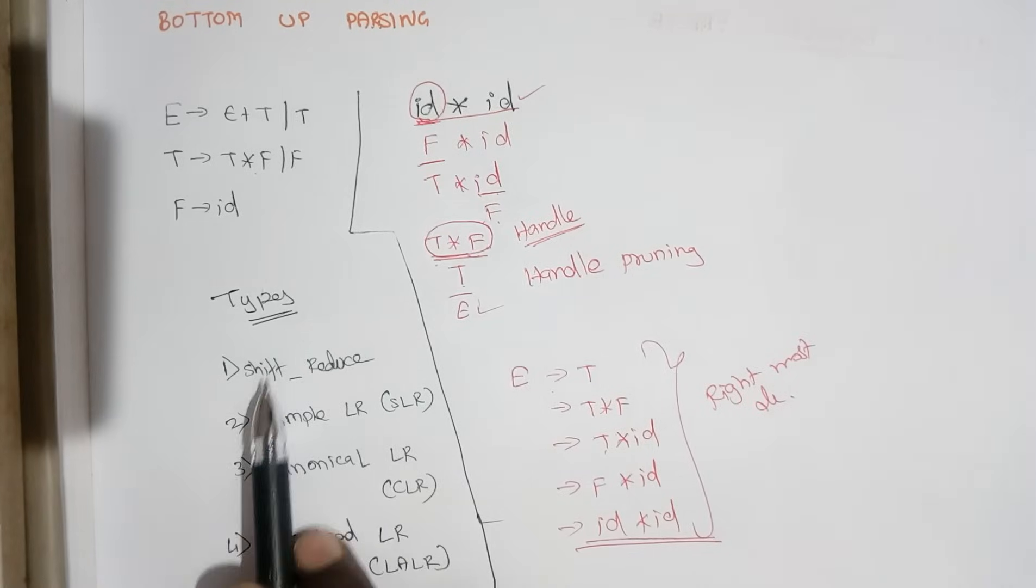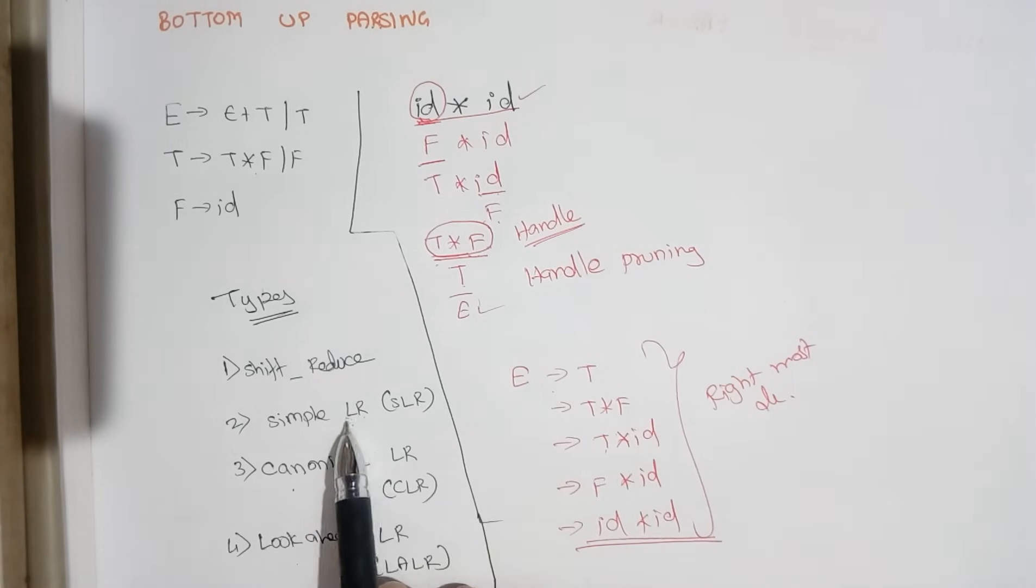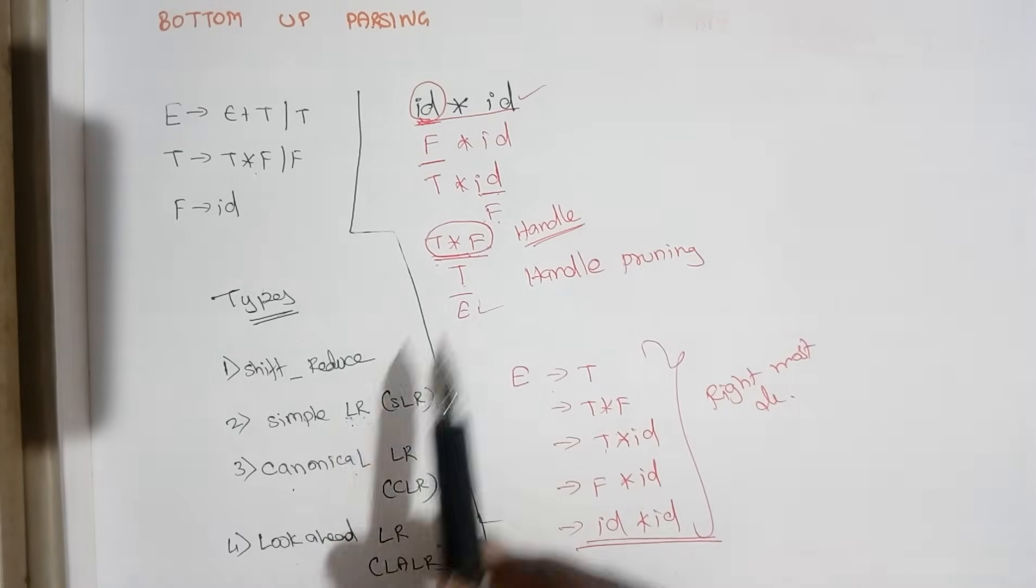So the types of bottom-up parsing are first shift-reduce parser, the basic parser, and we have simple LR, canonical LR and lookahead LR. So here LR actually denotes, we are going to scan the input from left to right.